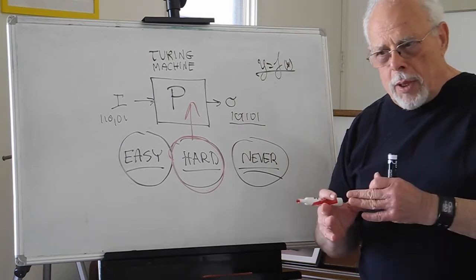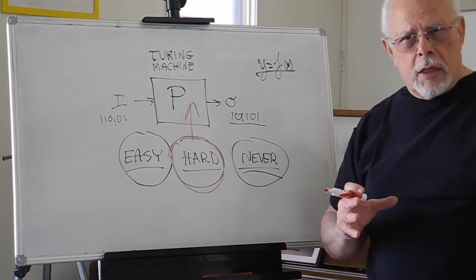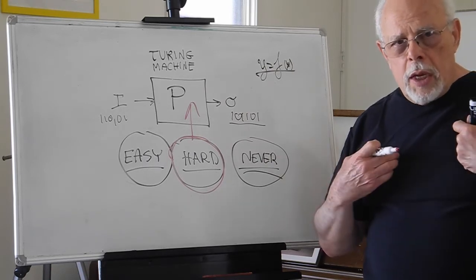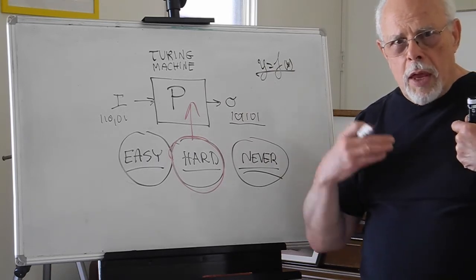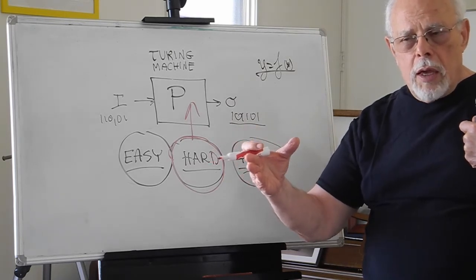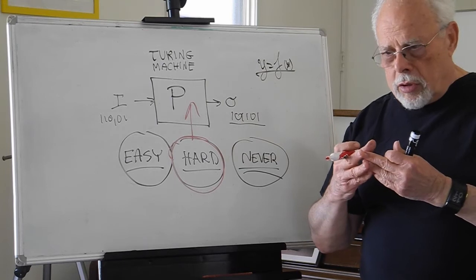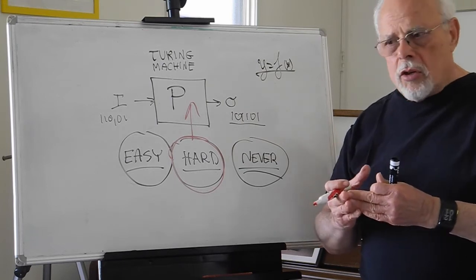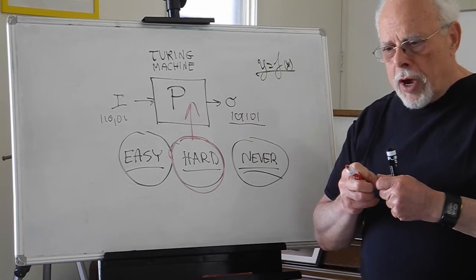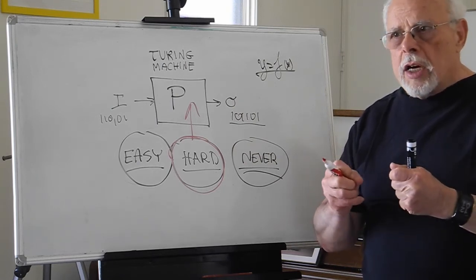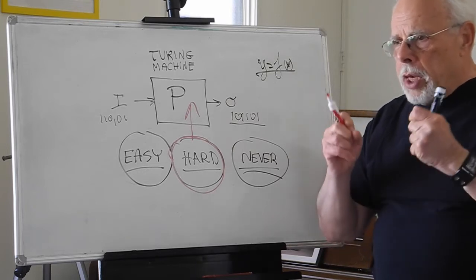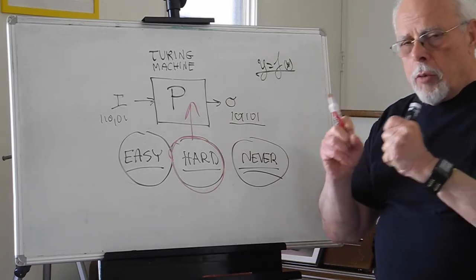The problem with this hardness is that what is hard for me may not be hard for the hacker who is after me. For the last decades, complexity theory tried to provide a proof that hardness is universal, that what's hard for me is going to be hard for anyone who is after me. We haven't proven that.